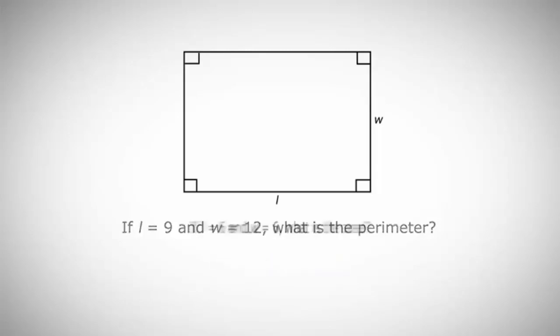The second question tells us that L is equal to 6 and W is equal to 6 and asks us to calculate the area. We can tell from the diagram that L and W form a 90 degree angle, so that's going to be our base and our height. All we need to do to calculate the area is multiply 6 times 6, which equals 36.